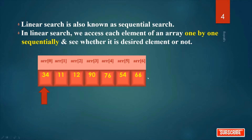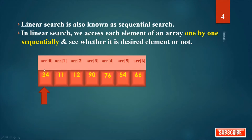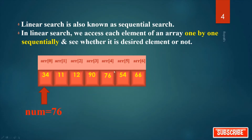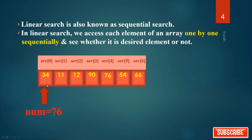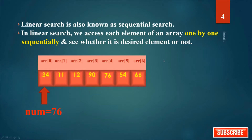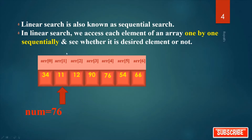Say this is one array from the 0th element to the 6th element, so there are 7 elements in this array. Now I want to search for 76 — in which position does 76 occur? First I start searching from the starting position, that is from the 0th element. Is this 76? No. Then you have to increase the index of the array. Say the index of the array is i, so you have to increase i. It is array[1] now.